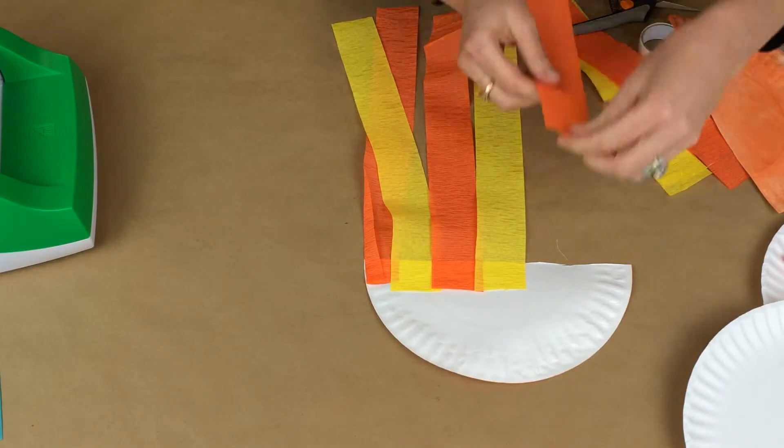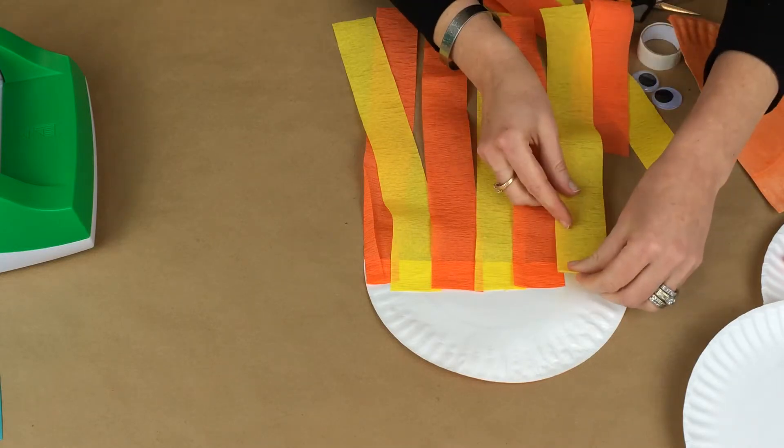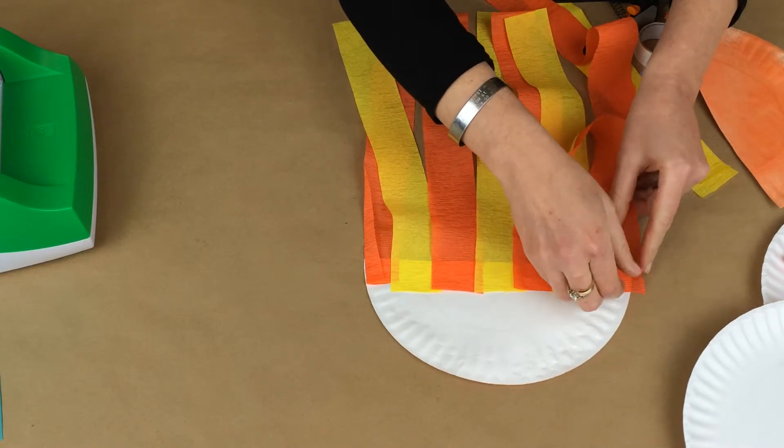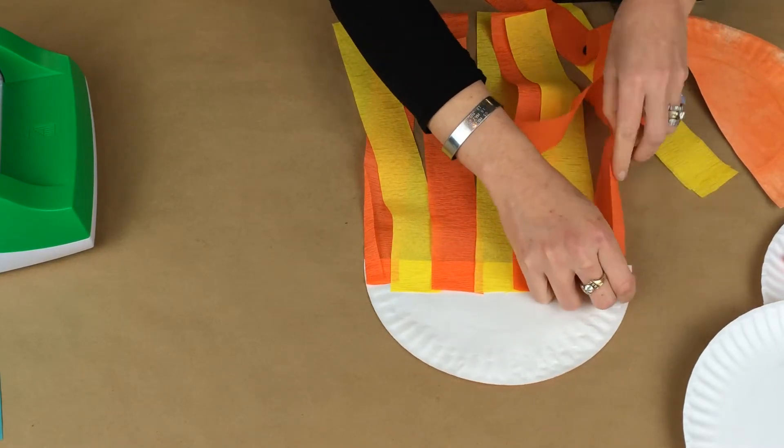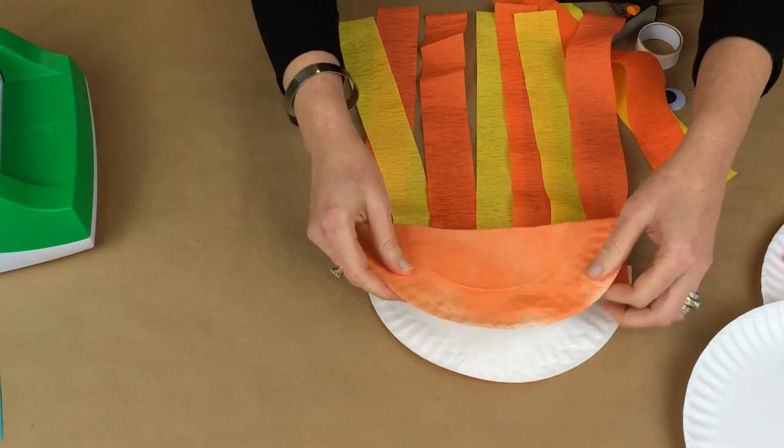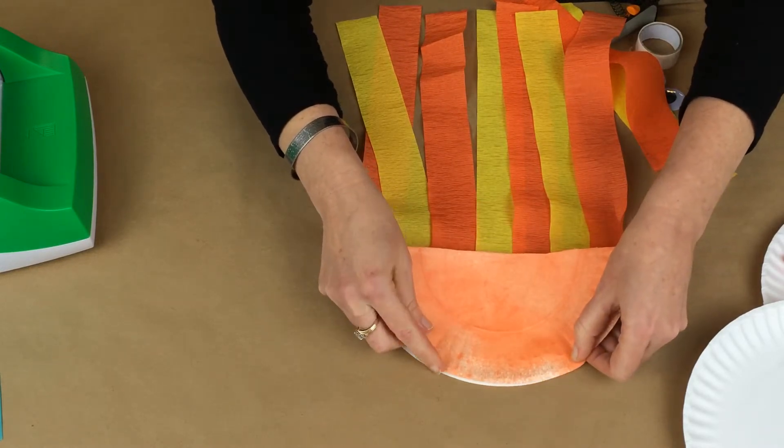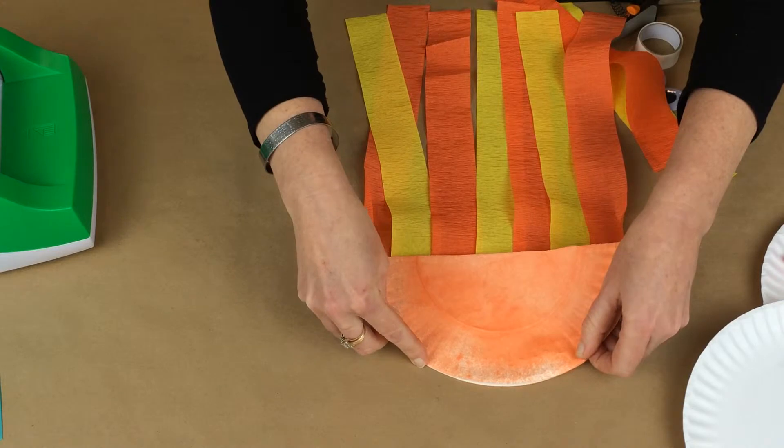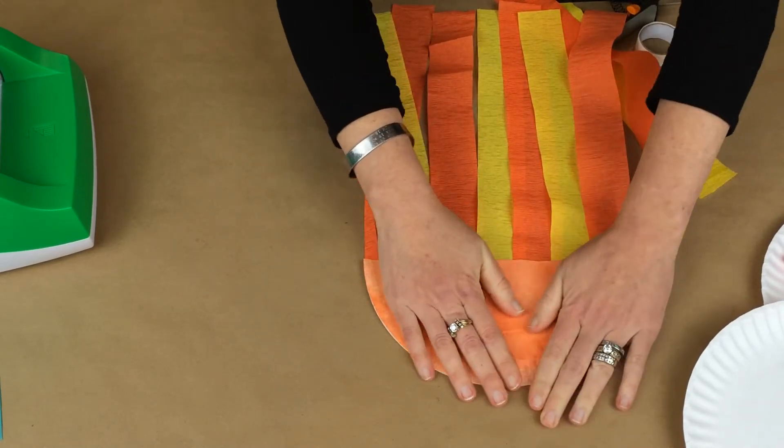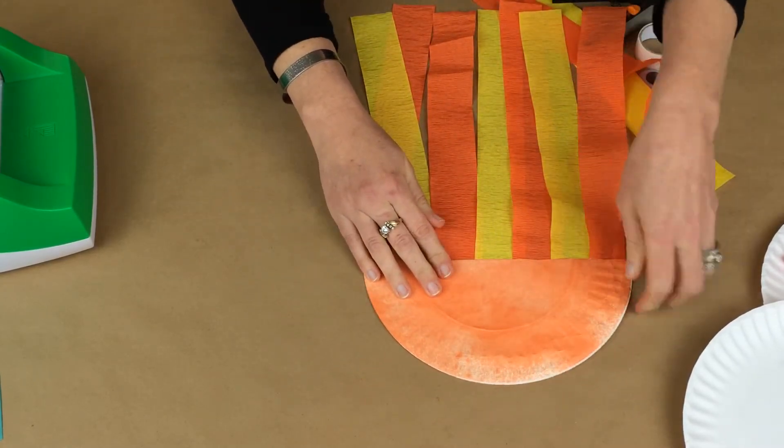This is a great use of leftover crepe paper from a birthday party. Crepe paper is so inexpensive though that if you want to buy it just to make this project you can do that as well. I'm going to fold over this edge right here. And then I'm just going to take the other half of my plate, line it up and press it down, and that's going to hold all of my other pieces in place. And if you've got a little bit of overhang you can just go ahead and trim that.